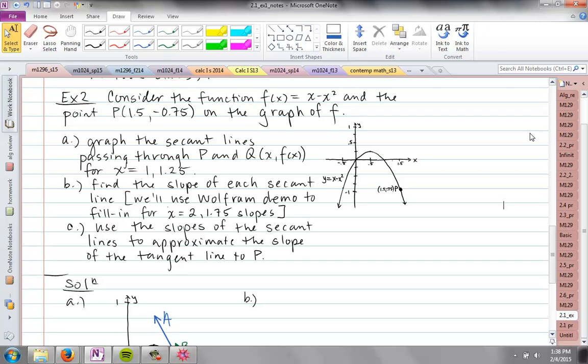2.1. Consider the function f(x) = x - x² and the point P on the graph of f where P is at (1.5, -0.75). So that's indicated on the graph here.